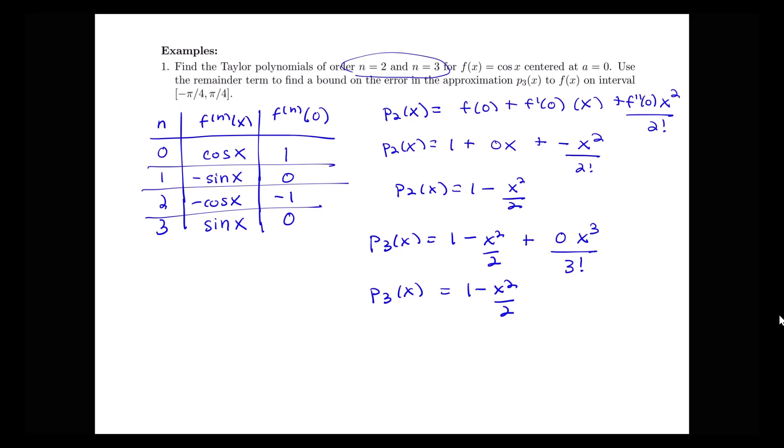So that's something that can happen for certain kinds of functions. So now it's saying we want to figure out the remainder term, or use the remainder term to find a bound on the error, and approximating our cosine function by this third order Taylor polynomial.